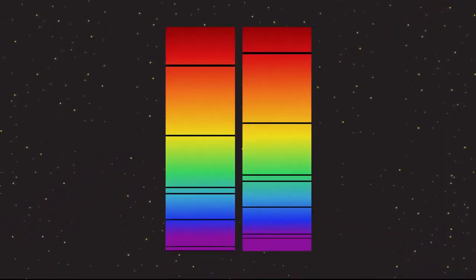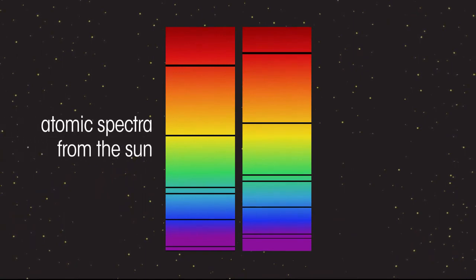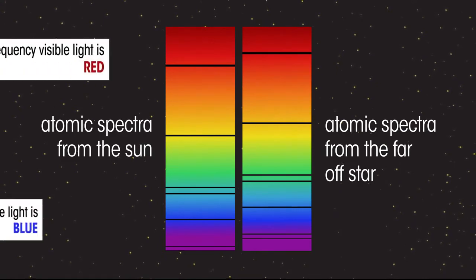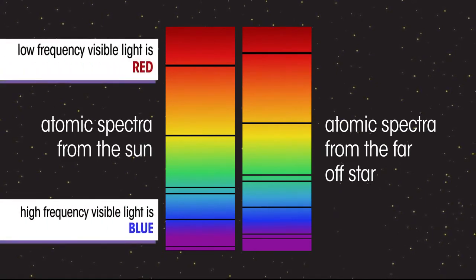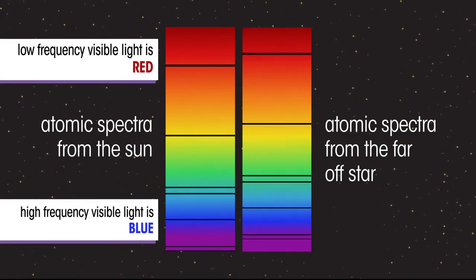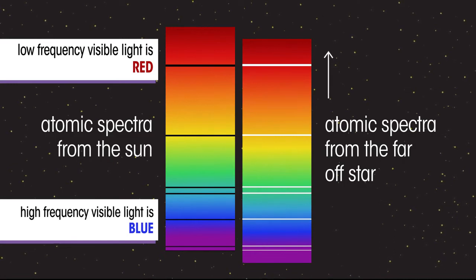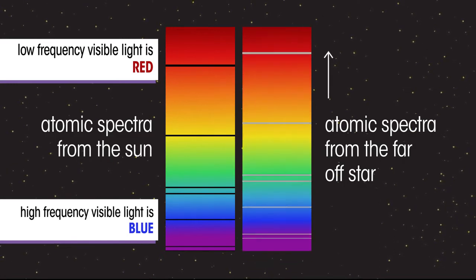Look at these two atomic spectra, one from our sun and the other from a distant star. Remember, low frequency visible light is red, and high frequency visible light is blue. The lines in the spectra are the same pattern, but they have been shifted to the red end of the spectrum of the distant star.